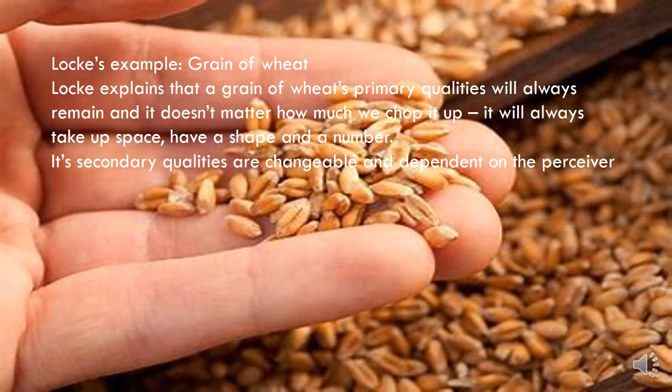Locke's example of primary and secondary qualities involves a grain of wheat. He explains that the grain of wheat's primary qualities will always remain — no matter how much you chop it up, it will always take up space, have a shape and a quantity. But its secondary qualities — colour, taste, and texture — are changeable and dependent on the perceiver.